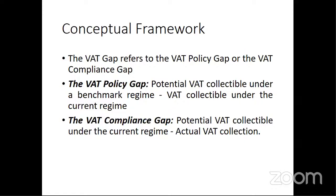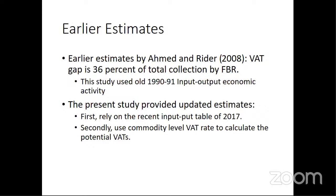The VAT compliance gap is the difference between the potential VAT collectible under the current regime and what is actually collected under the VAT head — this difference gives you non-compliance, tax avoidance, or tax evasion. We have some prior estimates of VAT gap in Pakistan: Ahmed and Rider estimated the VAT gap in 2018 at 36% of total FBR collection. However, the problem is it is old — more than 13 years old — and they used a very old 1991 sales tax base, which is not representative given all the structural changes since then. They also applied a simple GST rate rather than a commodity-level VAT rate.